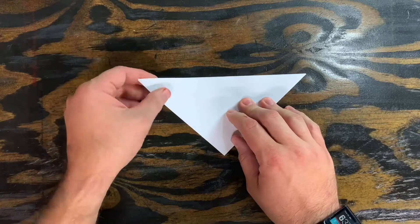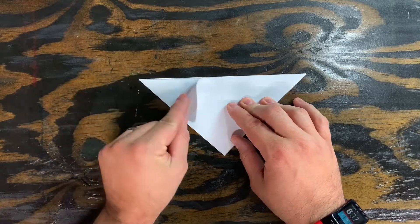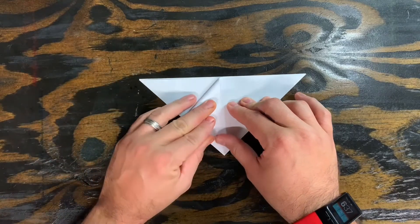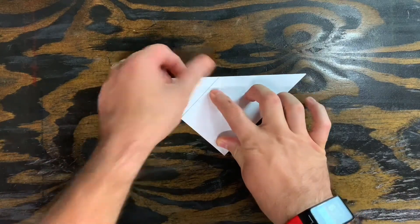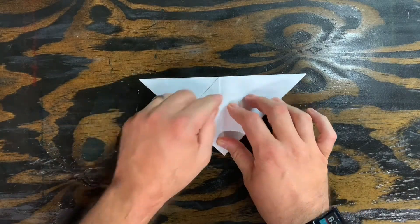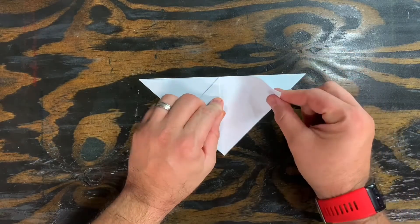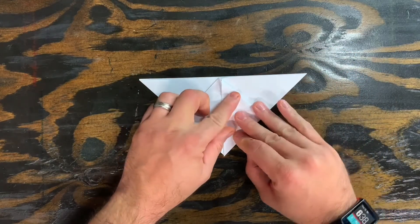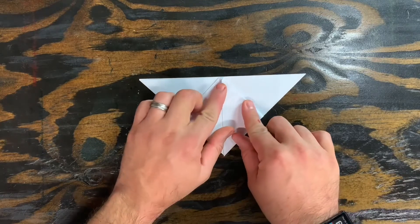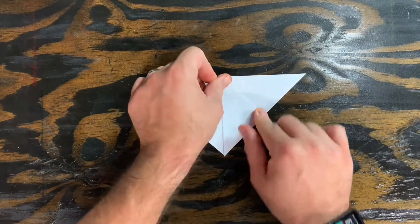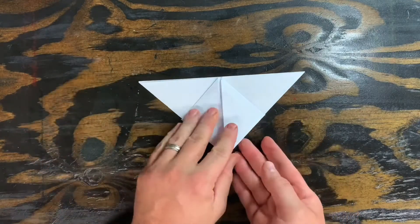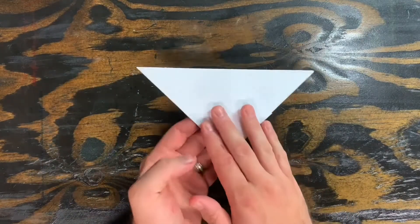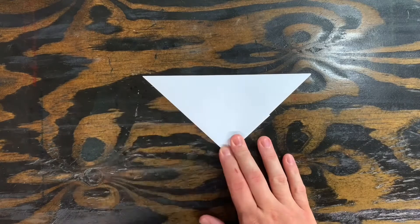We're gonna fold the top flaps down to the bottom point of the triangle. Leave that flap there. We're only gonna fold the top ones down to the bottom point and crease that fold. Next we flip the whole thing over so it's nice and flat again.